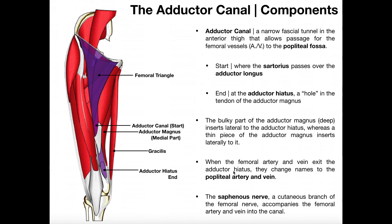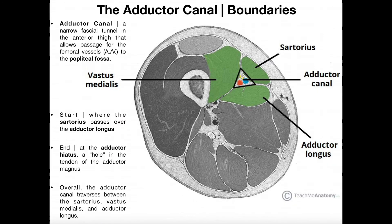In some ways, you could consider the adductor hiatus the end of the thigh region. Once we get past this, we have to start talking about the anatomy of the knee, and then past that, the lower leg. So hopefully this video gave you a good understanding of the adductor canal, its boundaries, and its components, and what it's used for.